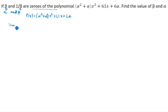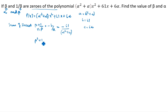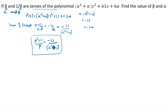What is the sum of zeros? The sum of zeros formula is: beta plus 1 by beta equals minus b by a. Here, a is equal to alpha squared plus alpha, b is equal to 61, and c is equal to 6 alpha. So, minus 61 divided by alpha squared plus alpha. This gives us beta plus 1 by beta equals minus 61 by (alpha squared plus alpha). This is equation 1.